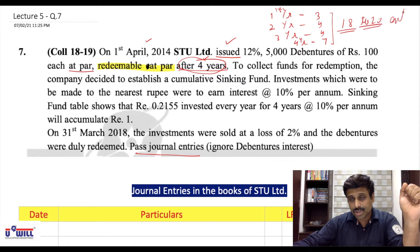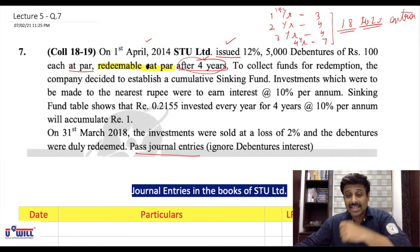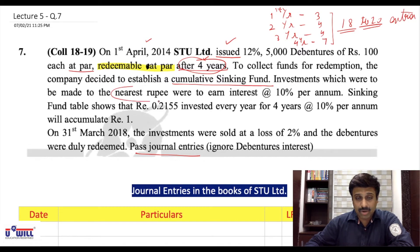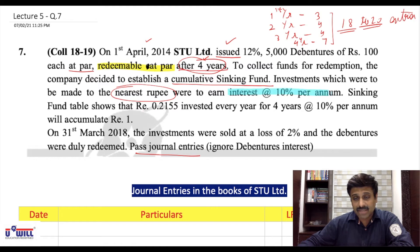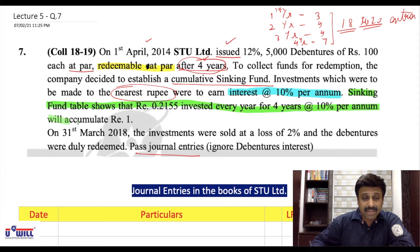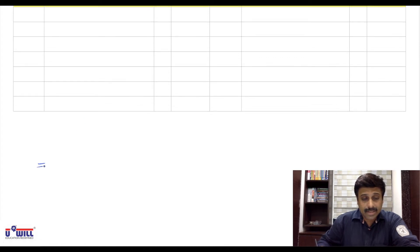To collect the funds for redemption, the company decided to establish a cumulative sinking fund. Investments were to be made to the nearest rupee. Investments were to earn interest at the rate of 10% per annum, meaning every year interest on investment will be calculated at 10% per annum. The sinking fund table shows that ₹0.2155 invested for four years at 10% per annum will accumulate ₹1. This will be required as Working Note 1.